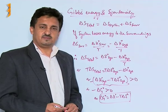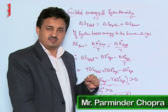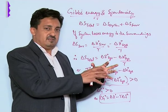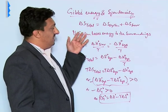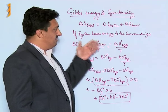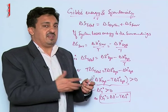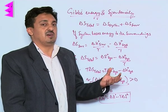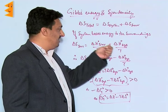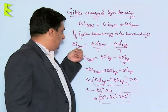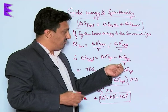Let us understand Gibbs energy and spontaneity. The total entropy change is equal to the entropy change of the system plus the entropy change of the surroundings. For a spontaneous process, entropy is always increasing. If the process is exothermic, the enthalpy of the surroundings increases. We can write delta S surroundings equal to negative delta H system divided by T, and substitute this into the total entropy formula.